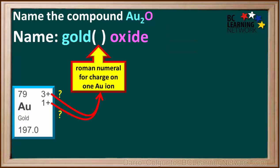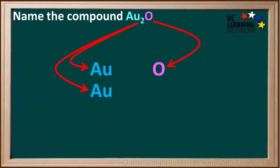In order to find the roman numeral that goes in here, we must find the charge on one gold ion. Is it positive 3 or positive 1? Here is how we do it.